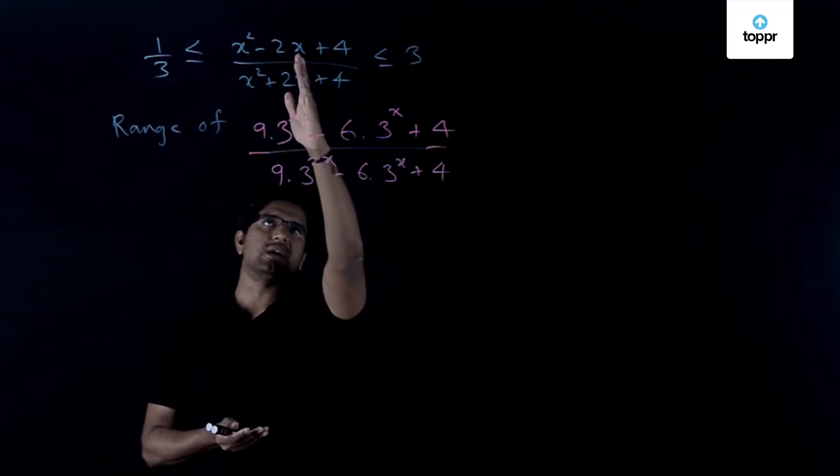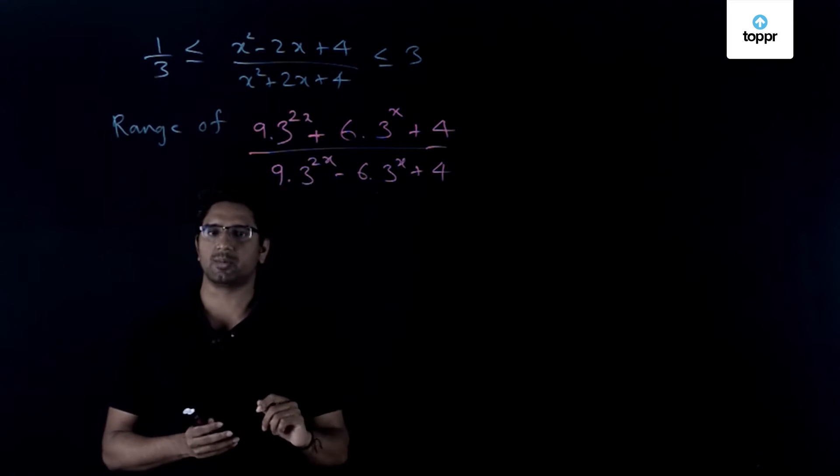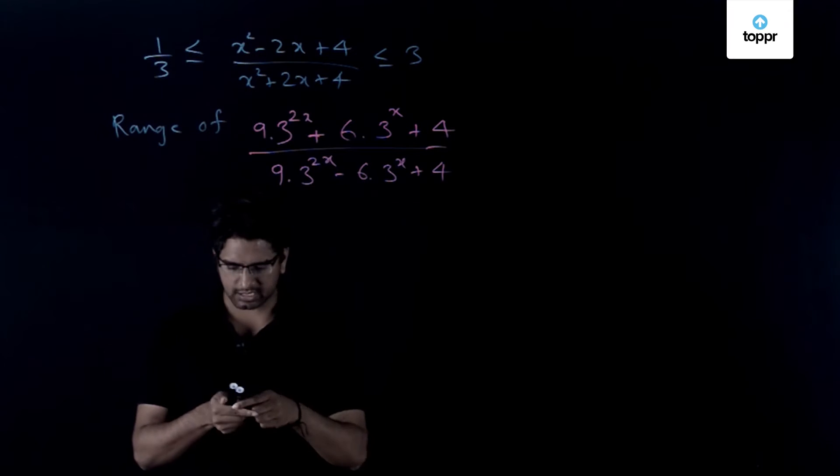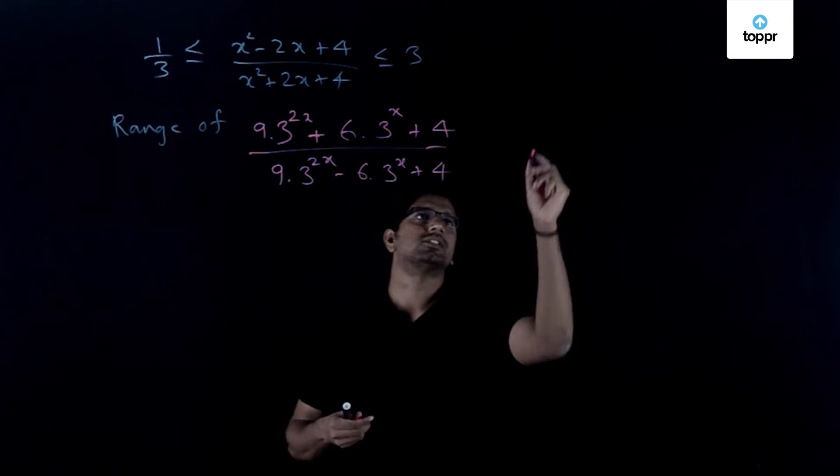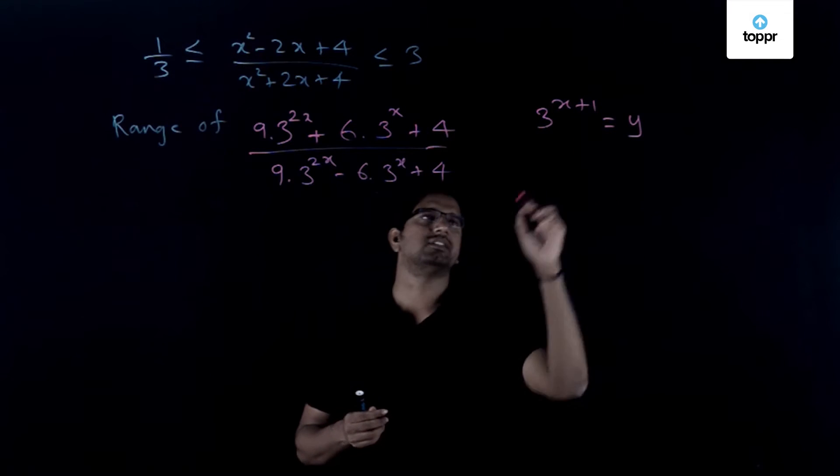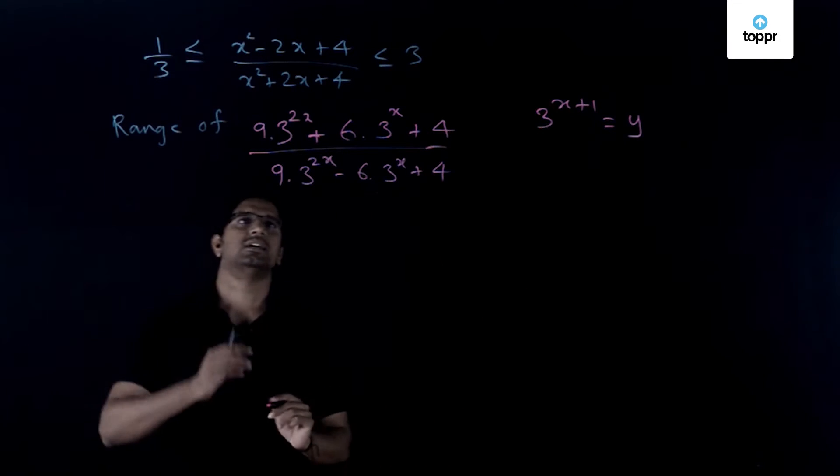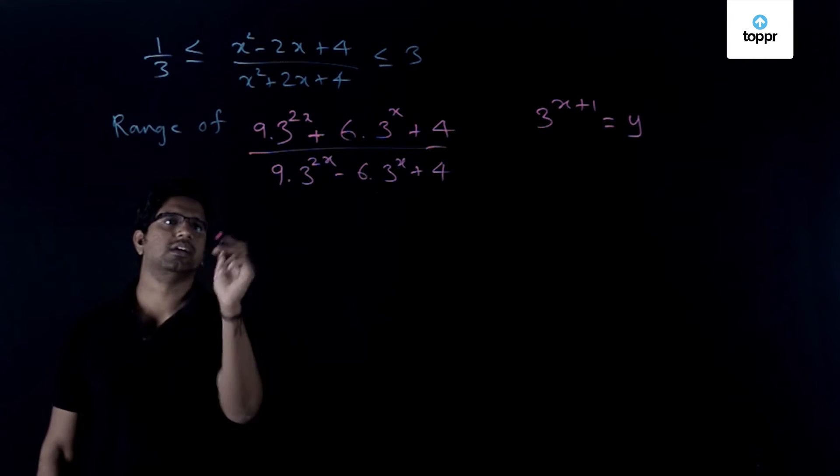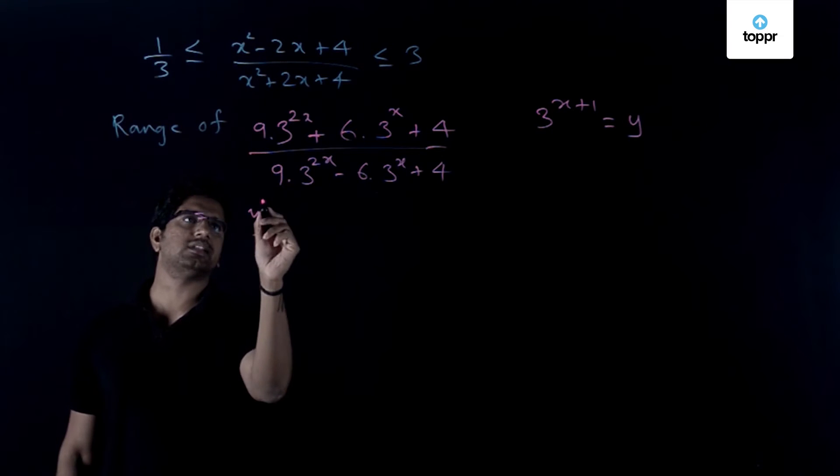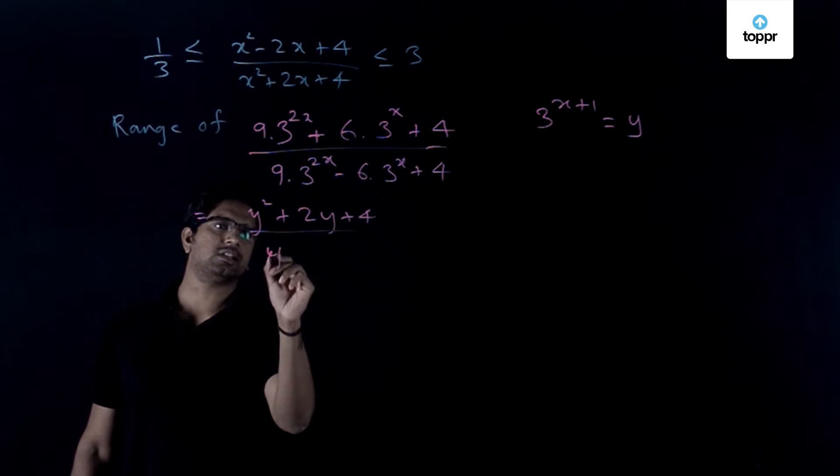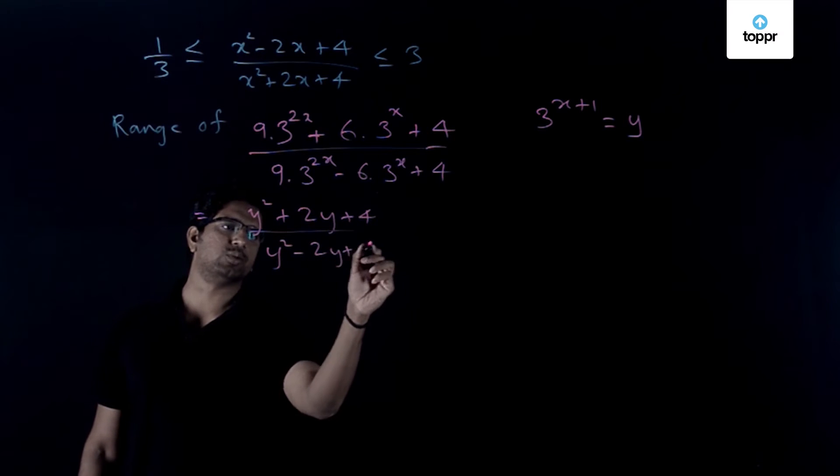First of all, if you compare this equation with this exponential equation, one can immediately figure out that if one makes a substitution that 3^(x+1), if you make the substitution that this is equal to y, then this expression which has been written here can be actually written as y² + 2y + 4 divided by y² - 2y + 4.